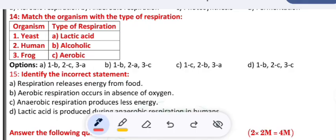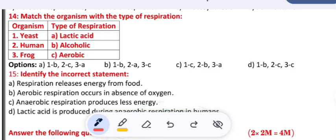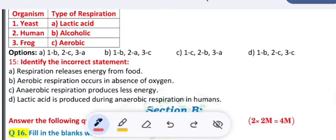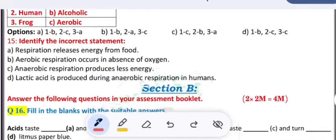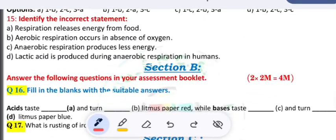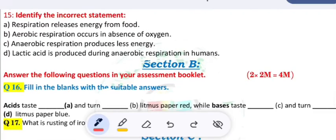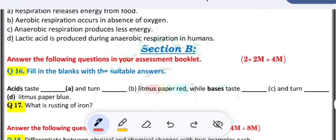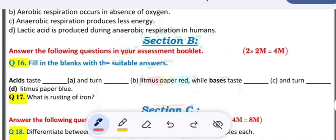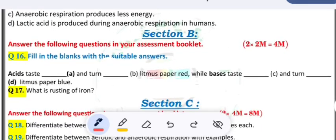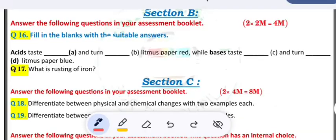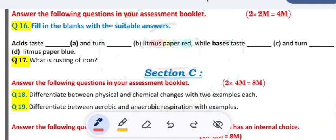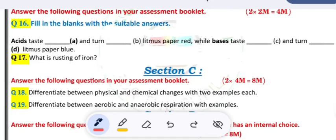Identify the incorrect statement: A) respiration releases energy from food, B) aerobic respiration occurs in absence of oxygen, C) anaerobic respiration produces less energy, D) lactic acid is produced during anaerobic respiration in humans. Section B: answer the following questions in your assessment booklet. 2 times 2 marks is equal to 4 marks.